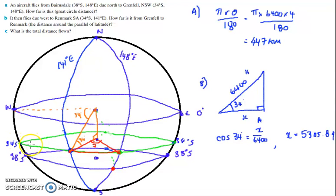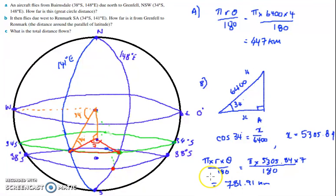That answer there is the distance of the radius of this green circle. So remember a radius is anywhere from the center of the circle out. We're going to use that information now to work out the arc length. So we have π times radius times angle over 180. π times our answer which is 5305.84 times our degrees which is 7 over 180. This would calculate to be 781.91 kilometers. So that's the answer to part B.